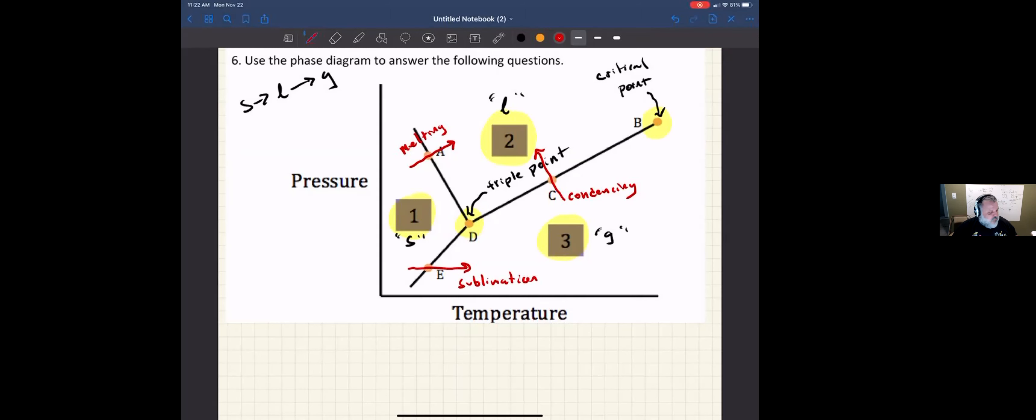And so that's all you have to know for this particular question. But you do have to be familiar with all the different points. And you have to be able to know what you call all these different transitions. So condensing and vaporization, melting and freezing, sublimation and deposition. All right, that's it.